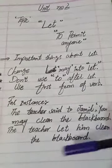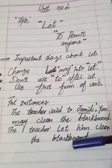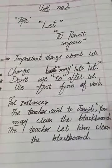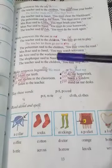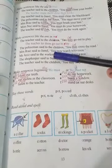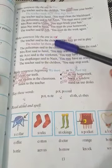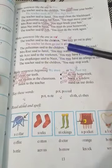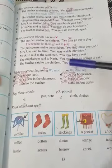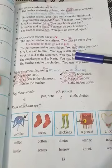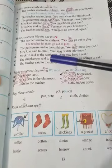Now let's look at the book. There are some sentences, and you will use the objective case with 'let,' use the first form of the verb, and change them the same way I have told you. If you don't understand, you can use the notes.